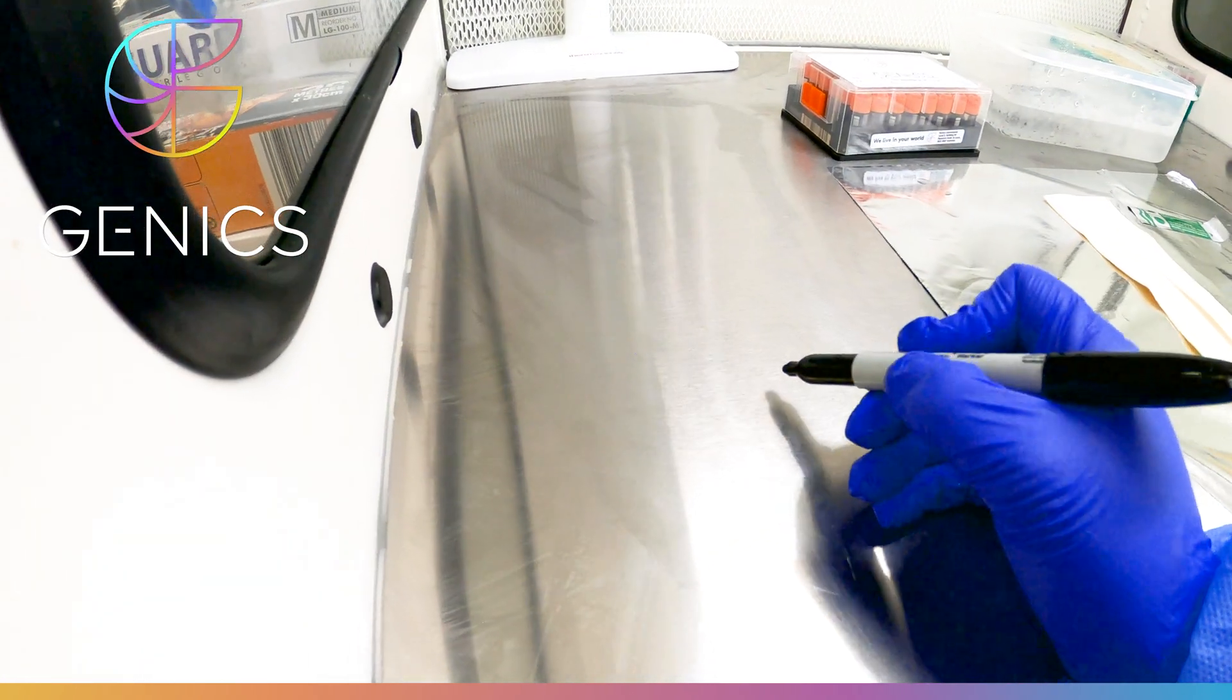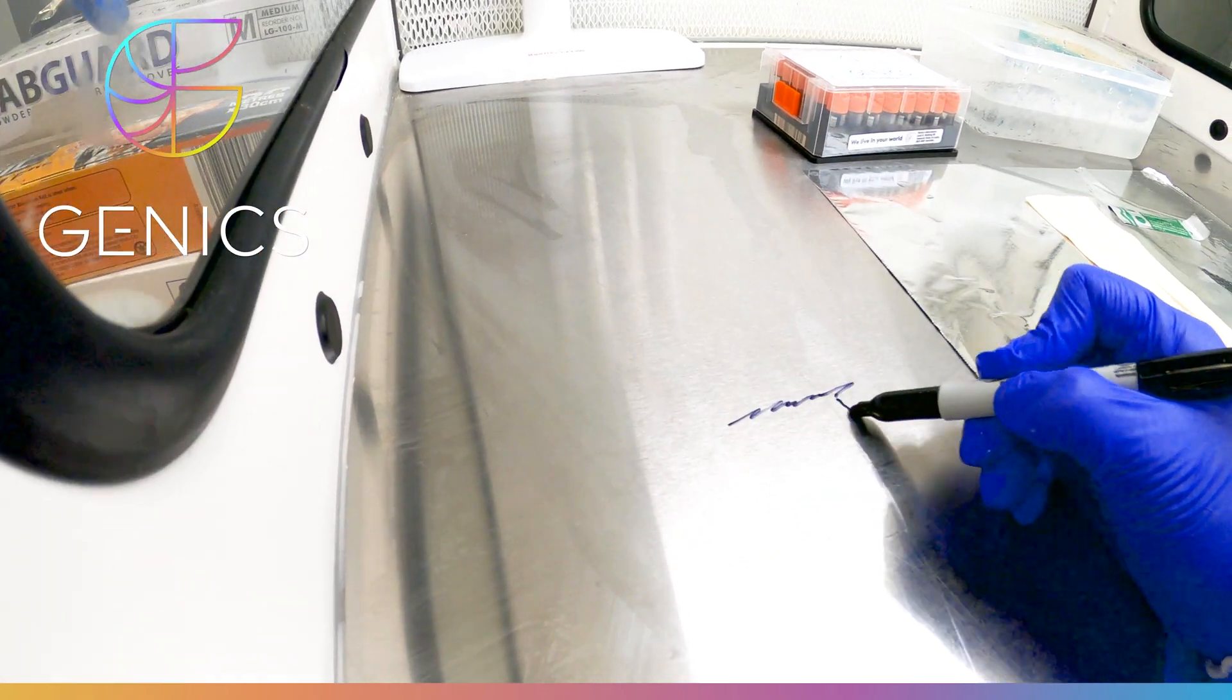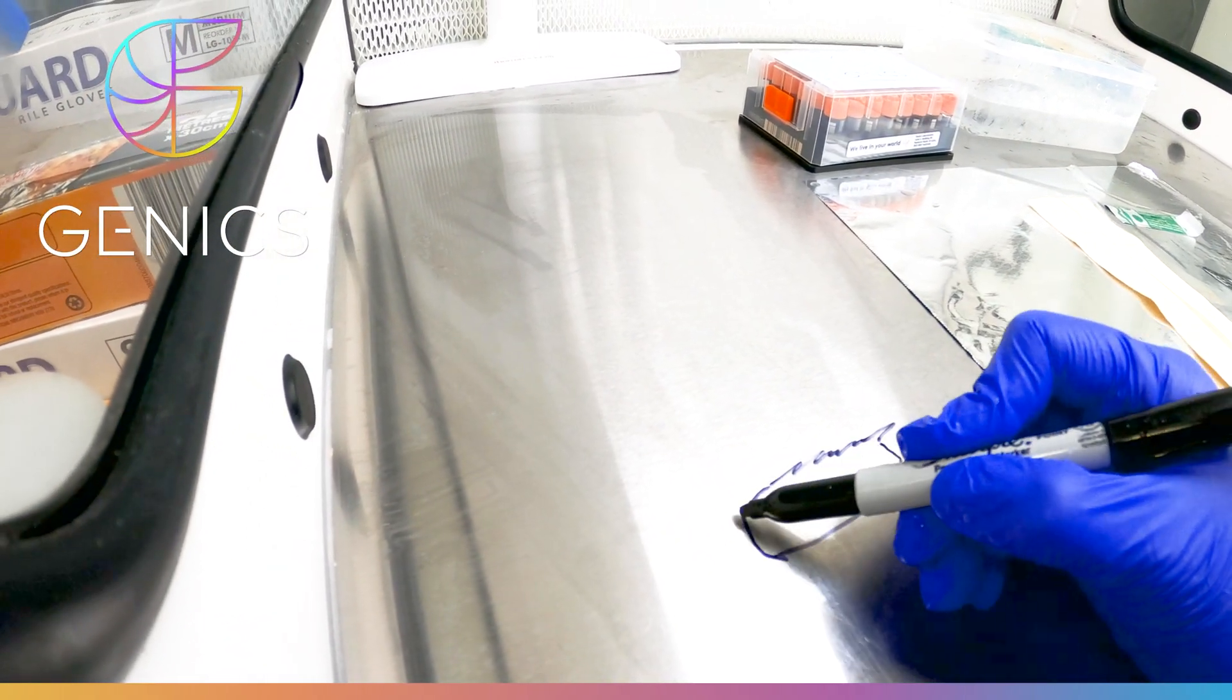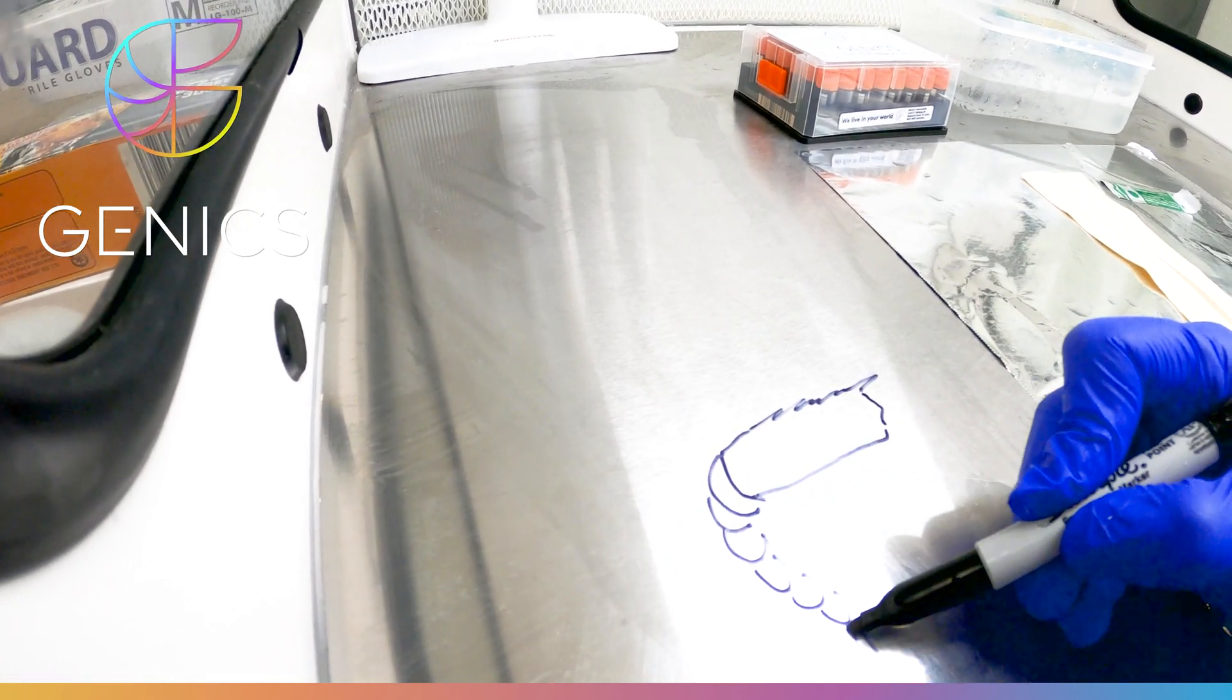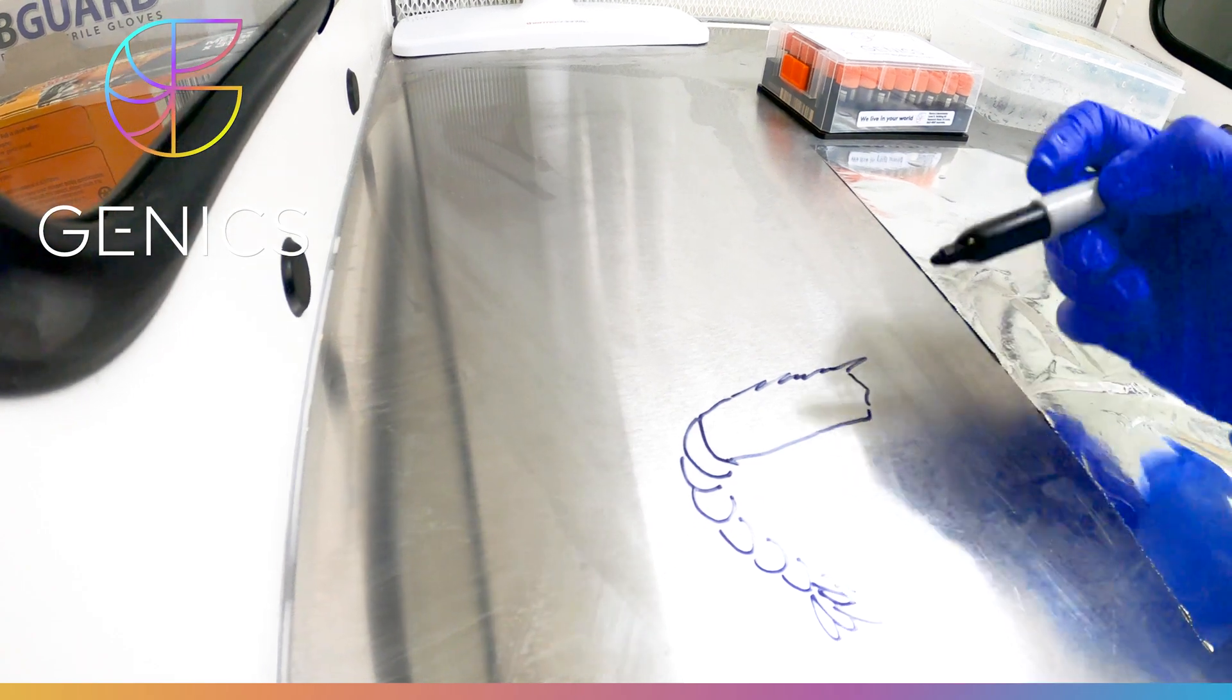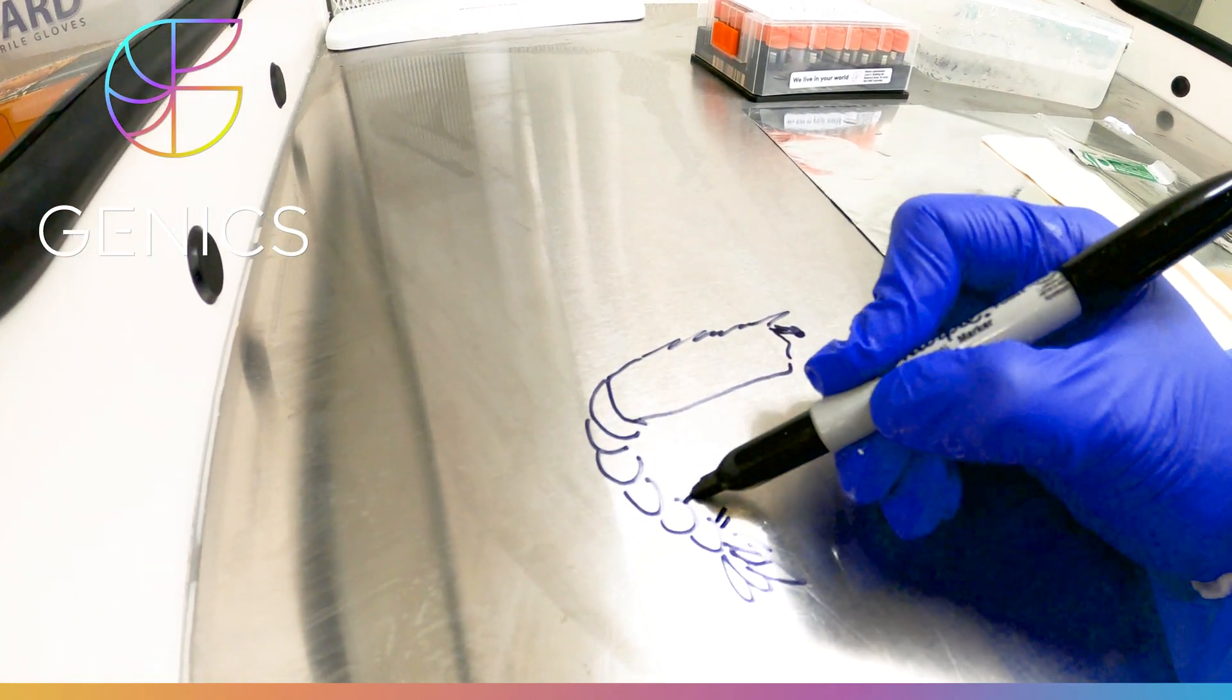So if I go here, we have the rostrum of our shrimp and its head and carapace and our tail, uropods, telson, eye. We have all of our pleopods here on the tail.